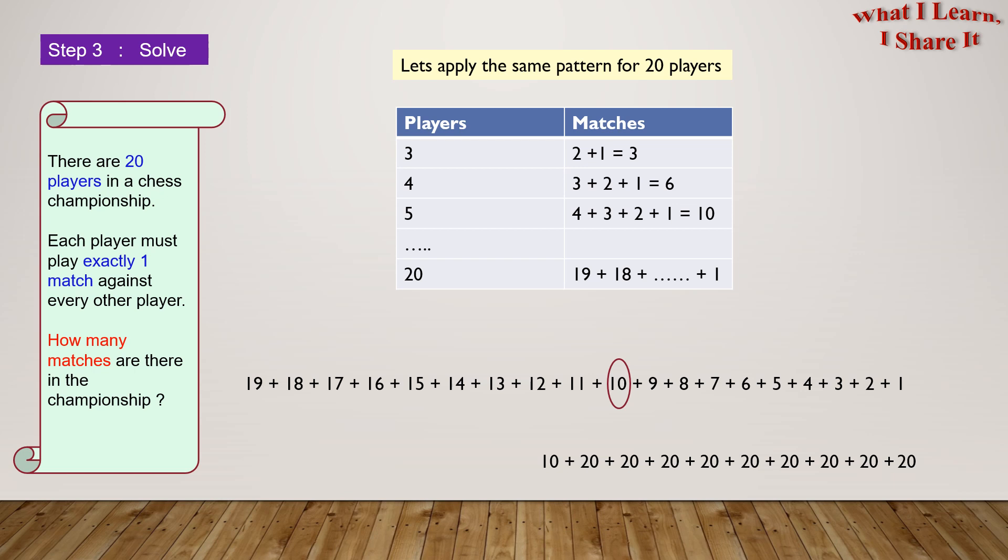So here we could see that we have 9 twenties for which we could easily do 9 times 20 equals 180. And now we could add this to 10 to get the final answer. 180 plus 10 equals 190. So there will be 190 matches in the championship. Yay! We solved the problem!